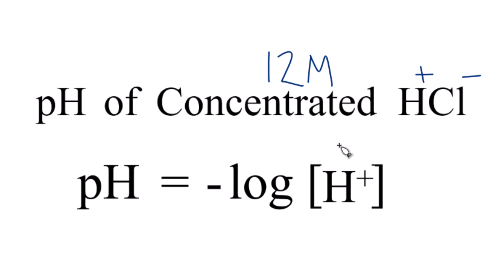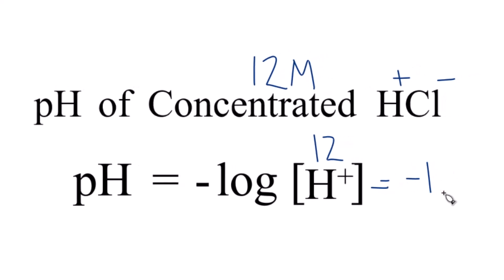So we're just taking the negative log of 12. When we take the negative log of 12, we end up with negative 1.1. So the pH of concentrated hydrochloric acid is actually negative 1.1. It's a negative pH, and we can do that. This is a very concentrated solution of hydrochloric acid.